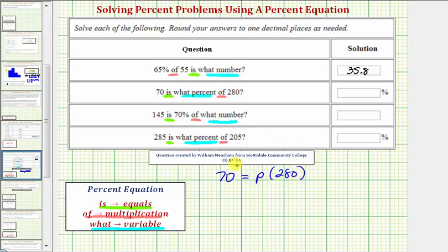Well, p times 280 is equal to 280p, so we have 70 equals 280p. To solve for p, we divide both sides by 280.